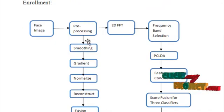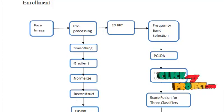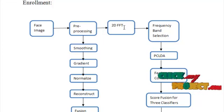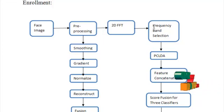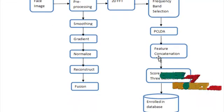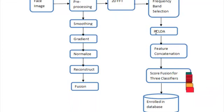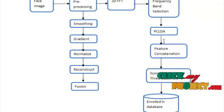This Fusion is done for the Model 1 Reconstructed Image and the Model 1 Phase Image. Then apply this to 2D Fast Fourier Transform. You have to select Frequency Bands in every model and apply PCA-LDA, where PCA is applied for Dimensionality Reduction of the Features and LDA for Classification.